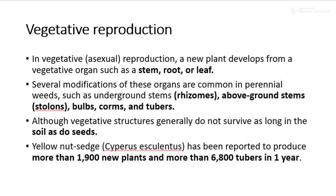In vegetative reproduction, several modifications of these organs are common in perennial weeds, such as underground stems (rhizomes), above-ground stems (stolons), bulbs, corms, and tubers. Although vegetative structures generally do not survive as long in the soil as seeds, some perennial weeds can produce a large number of plants from a single plant. For example, yellow nutsedge (Cyperus sculentus) has been reported to produce more than 1,900 new plants and more than 6,800 tubers in one year.